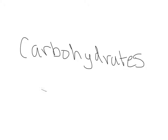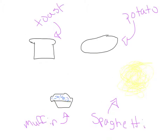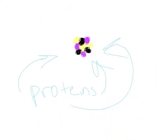Carbohydrates help with the structure of the cell, and it is an organic molecule, and it produces cellulose, which is important to a plant. Toast, potatoes, muffins, and spaghetti are examples of carbohydrates. A protein helps function the cell and is the building block of structure, and proteins are spread throughout the cell.